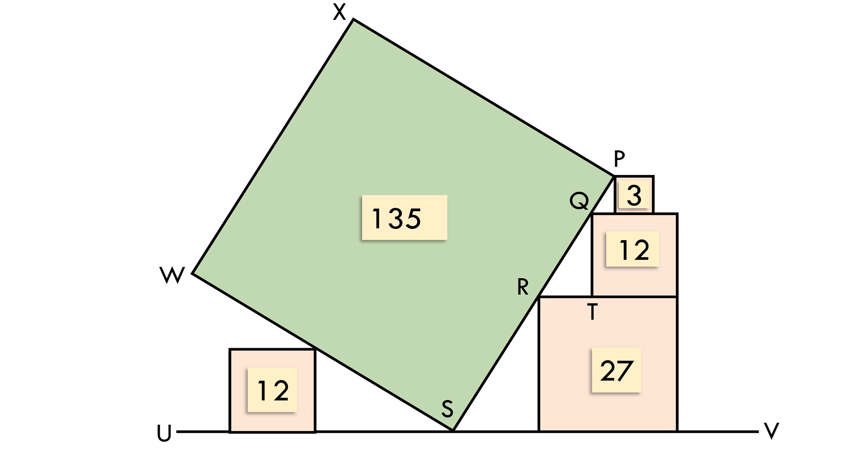You must have noticed that the square on the bottom left doesn't have any role to play in finding the solution. It's merely there to support the tilted big square.